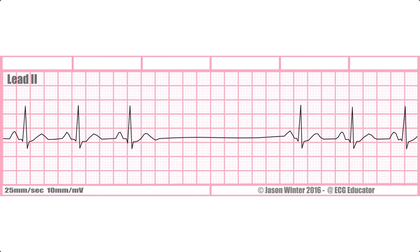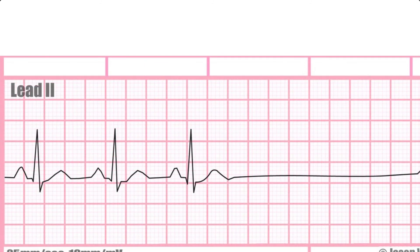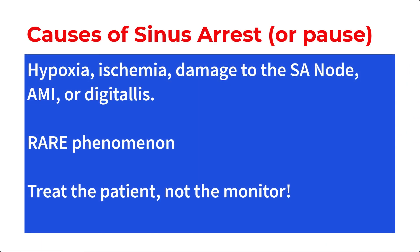In an isolated instance this is no problem, but if the SA node just stops firing entirely and no backup pacemakers do their job, the result is asystole and cardiac arrest. Sinus pause or arrest can be caused by hypoxia, ischemia, damage to the SA node, digitalis, or acute MI. This is generally a rare dysrhythmia, and it probably doesn't matter whether you call it a pause or an arrest as long as you are assessing the clinical impact on your patient and are prepared to manage that arrest if it continues.